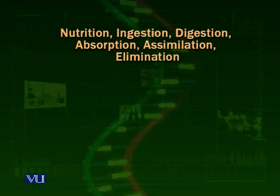Now we talk about the processes of nutrition, which includes acquiring energy through various strategies — such as acquiring food by mouth parts, by behavior, or maybe through sunlight. But the organisms, particularly animals, which we are more concerned with in this course, they have to digest their food.